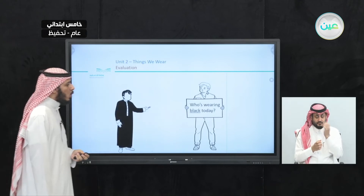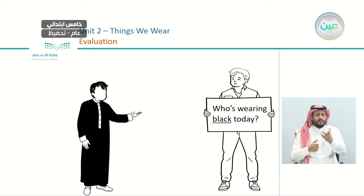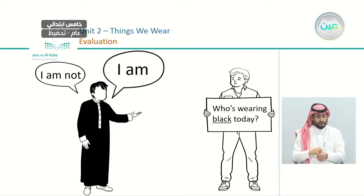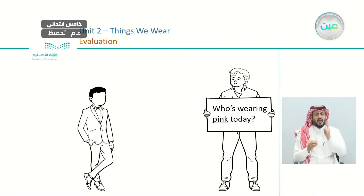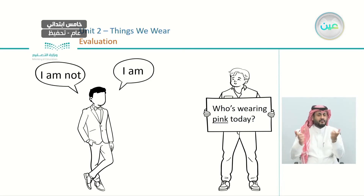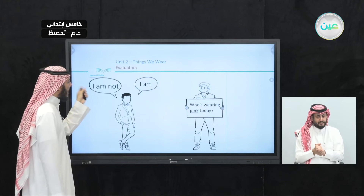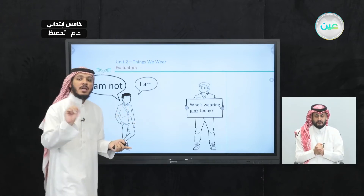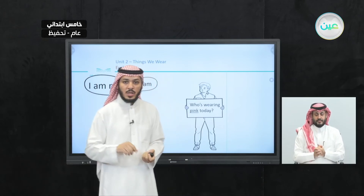Who is wearing black today? And this man is wearing black — he says 'I am.' Why? Because he is wearing black. So: 'Who is wearing black? I am wearing black.' Who is wearing pink today? This man says 'I am not' — because he is wearing white, not pink. 'I am not wearing pink today.'